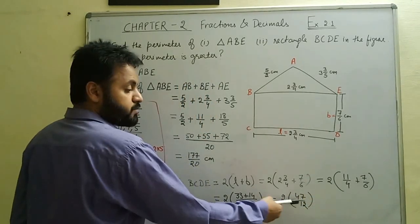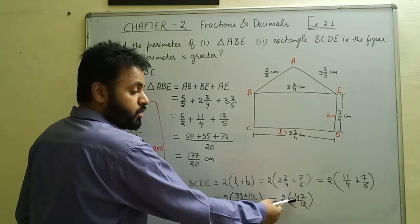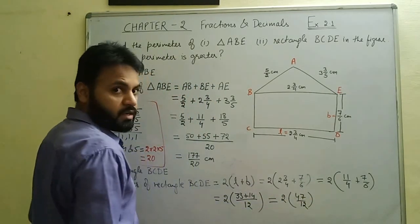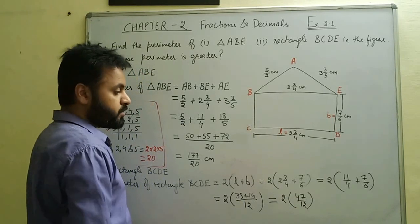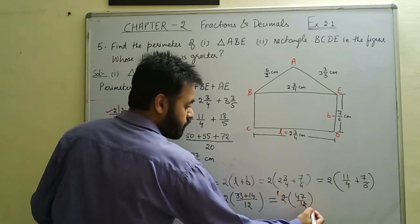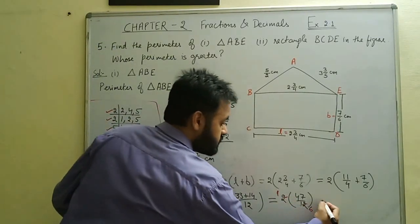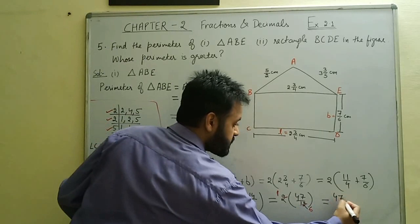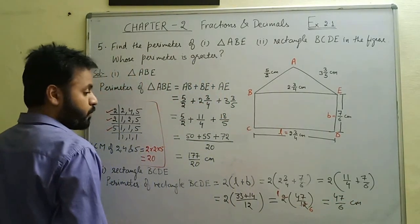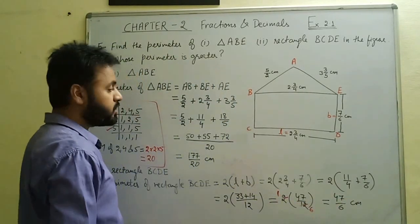When a natural number is multiplied to a fraction it can be multiplied to the numerator or cancelled with the denominator. Here we cancel 2 with 12, giving us 47/6 cm as the perimeter of rectangle BCDE.